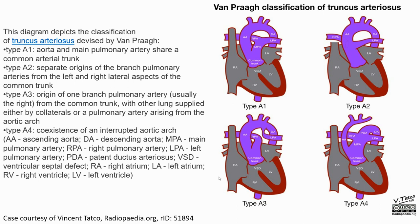An alternative classification also includes: Type one, aorta and main pulmonary artery share a common arterial trunk. Type two, aorta and main pulmonary artery arise from the left and right lateral aspects of the common trunk. Type three, origin of one branch pulmonary artery from the common trunk with the other lung supplied either by collateral vessels or a pulmonary artery arising from the aortic arch. Type four, co-existence of an interrupted aortic arch.